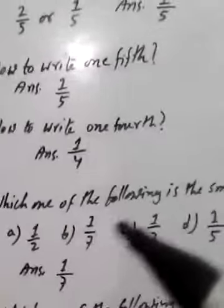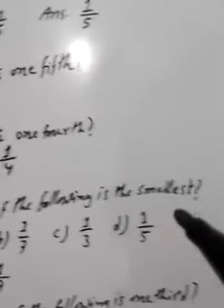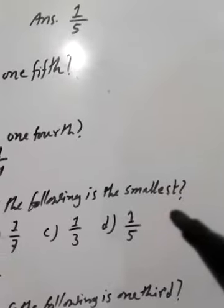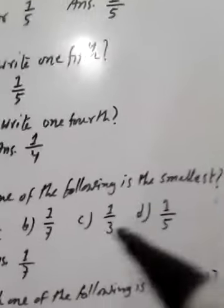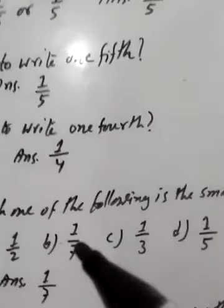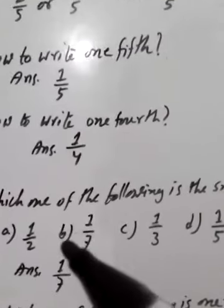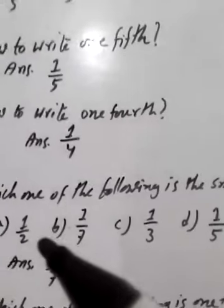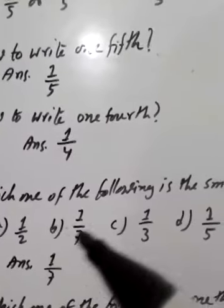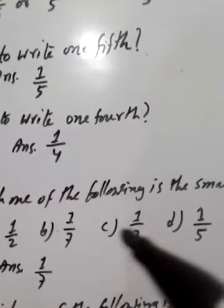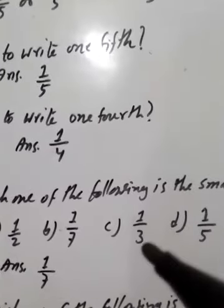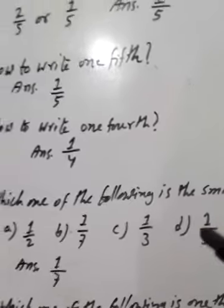Which one of the following is the smallest? See: 1 by 2, 1 by 7, 1 by 3, 1 by 5.